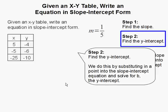Step 2. Find the y-intercept. And to do this, we substitute in a point into the slope-intercept equation. So we're going to take one of the points right here and substitute that into the slope-intercept equation. And also we're going to substitute the slope in as well.